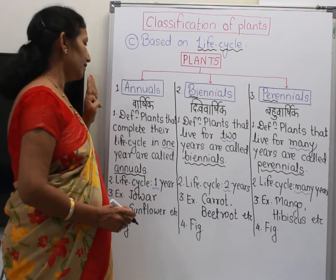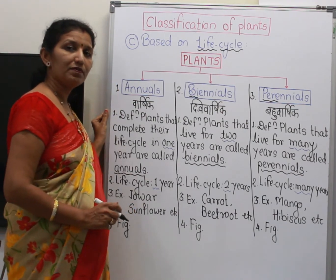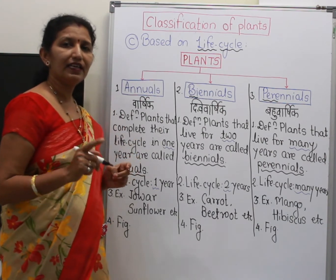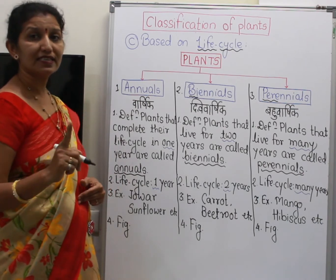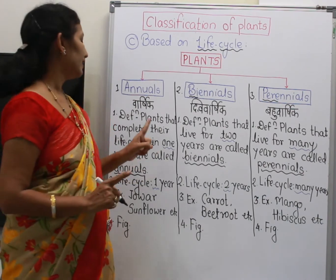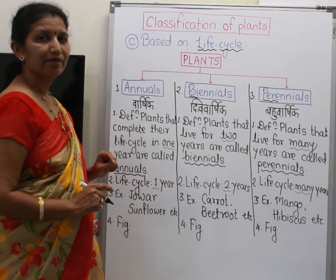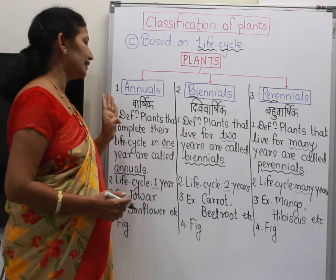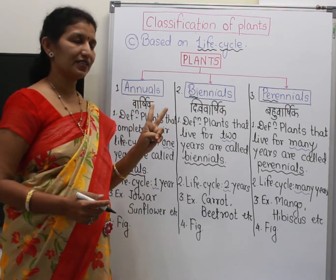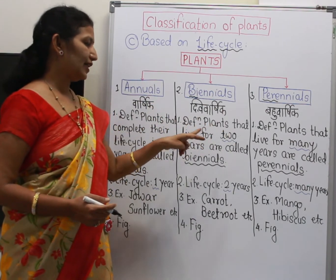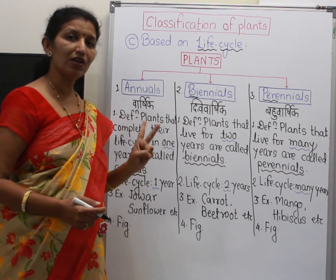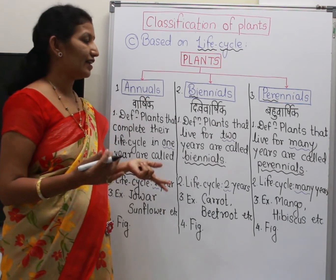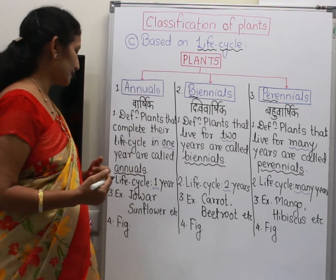So, first the definition of annuals: plants that complete their life cycle in one year are called annuals. Plants that complete their life cycle in two years are called biennials. And plants that live for many years are called perennials.